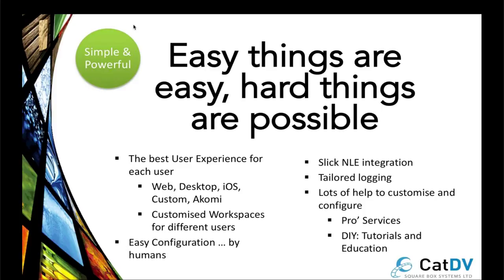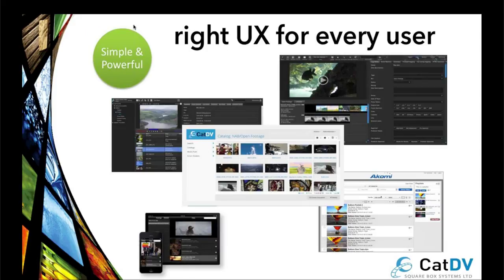Easy things are easy, hard things are possible with CatDV. We have lots of different interfaces and APIs to connect to all your third-party applications — transcoders, QC tools, uploaders, and downloaders. CatDV can be the one interface to rule them all, giving you a way to view all your disparate applications and pull them together in an automated fashion. Not everybody needs the same complexity — some people just need a simple app, a web page, or advanced customization tools. With CatDV, we have an interface for everybody.